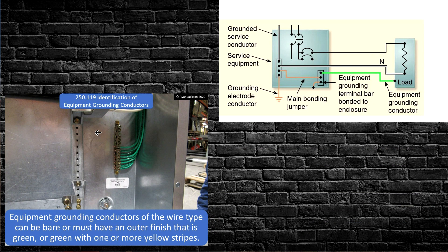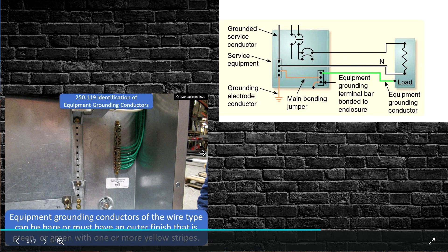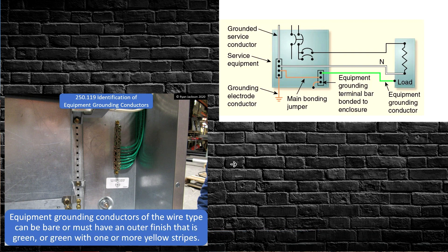Here are some examples. Per NEC 250.119, identification of equipment grounding conductors: EGCs of the wire type can be bare, or must have an outer finish that is green or green with one or more yellow stripes. An example diagram shows all three conductors together — the grounded service conductor (neutral), the equipment grounding terminal bar bonded to the enclosure, and the equipment grounding conductor.